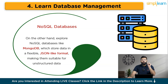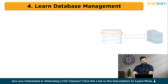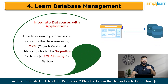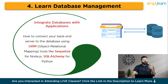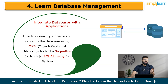For example, building a database for a blogging platform where each blog post is a document in a collection will give you hands-on experience in managing unstructured data. This is particularly useful for applications requiring flexible schemas and high scalability. You can also integrate databases with your applications by learning how to connect your back-end server to the database using ORM — object-relational mapping — tools like Sequelize for Node.js, SQLAlchemy for Python, or ActiveRecord for Ruby on Rails. These tools help simplify database interactions and allow you to work with database records as if they were objects in your programming language. For example, creating a RESTful API that interacts with your database to manage user data for a web application will give you practical experience in building full-fledged applications.